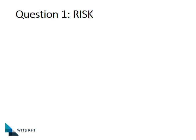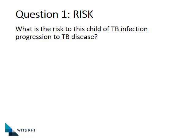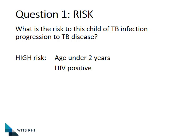The first question is risk: what is the risk to this particular child that, if they have TB infection, it might have progressed to TB disease? This has to do with the age of the child. Children under the age of two years have a very immature immune system, and if infected with TB, there is a very high risk it will progress to TB disease. Similarly, any child who has HIV, no matter what the age, is at higher risk of TB infection progressing to TB disease.